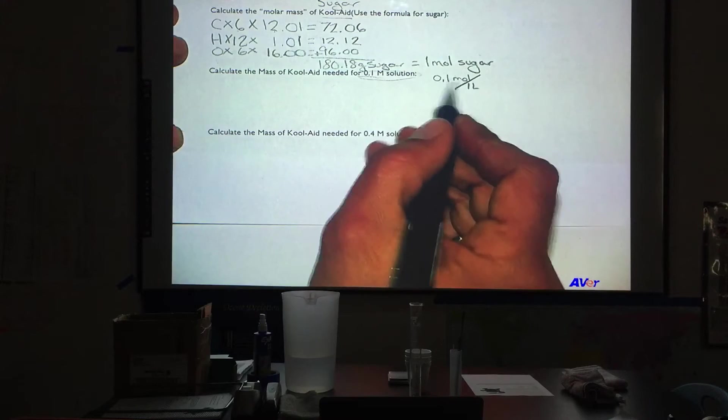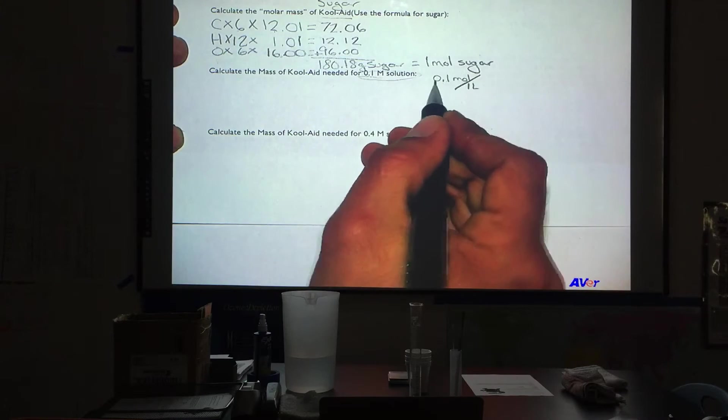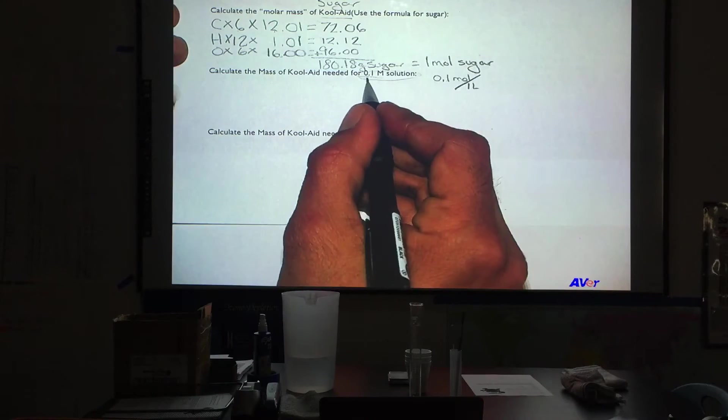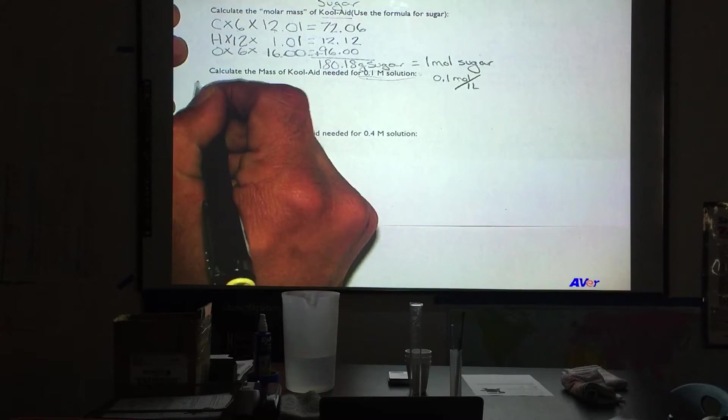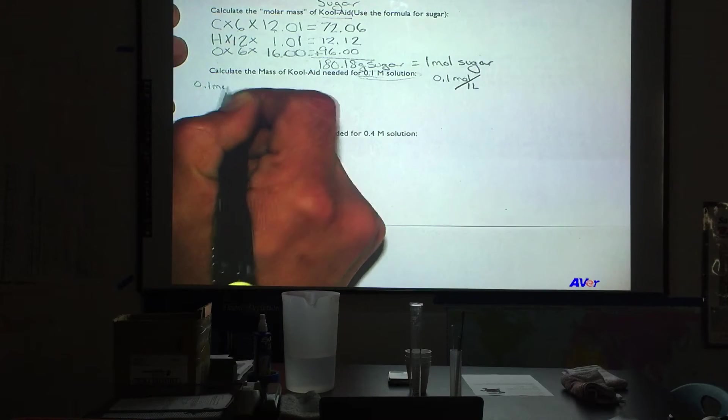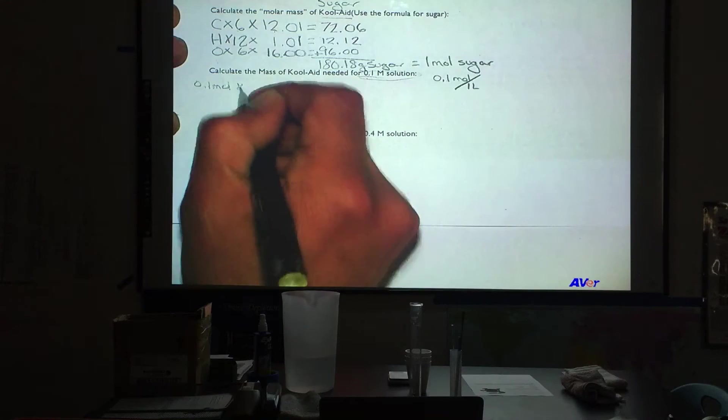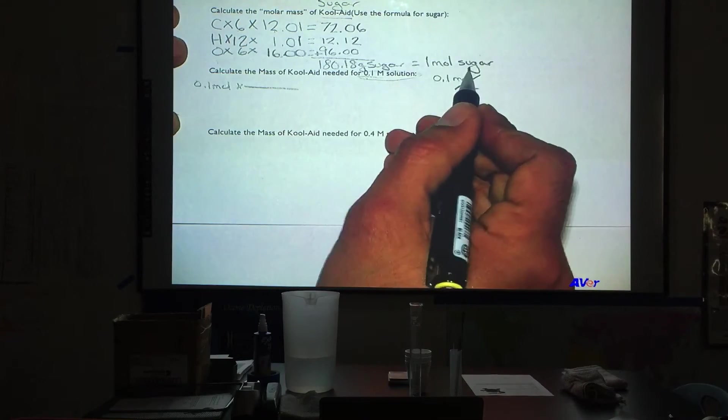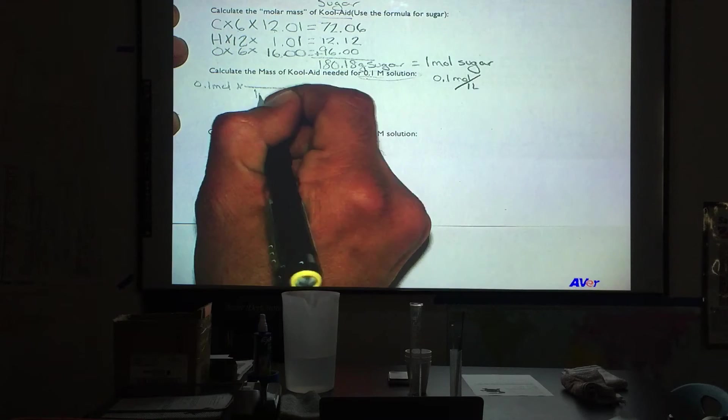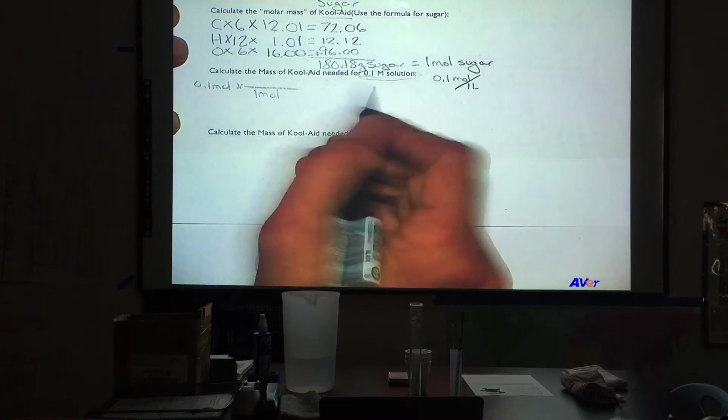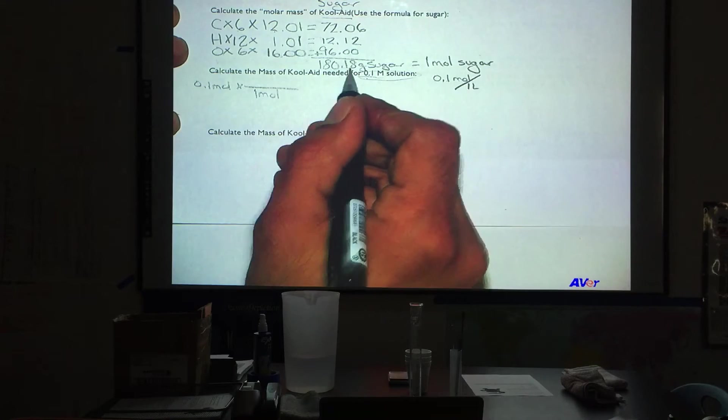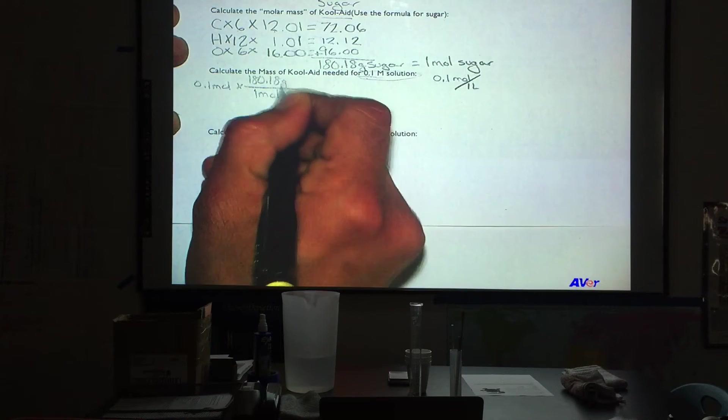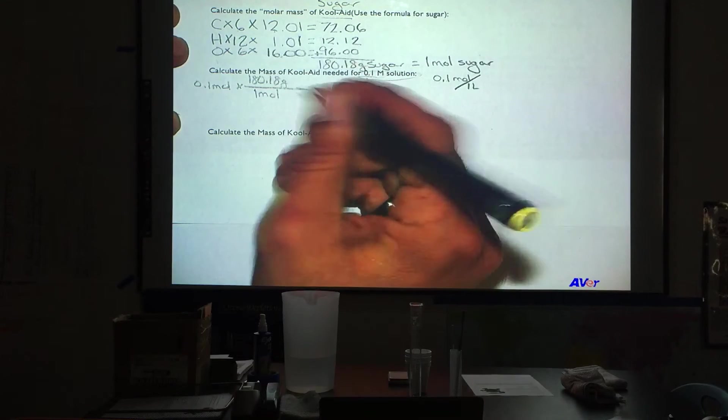We need to find out how many grams are in 0.1 moles. So we do that by converting. We will start with 0.1 moles. Then we are going to use this conversion factor and we are going to get rid of moles. We will put 1 mole. I am going to put the 180.18 grams. Here I am going to put sugar because that unit is going to be there at the end.